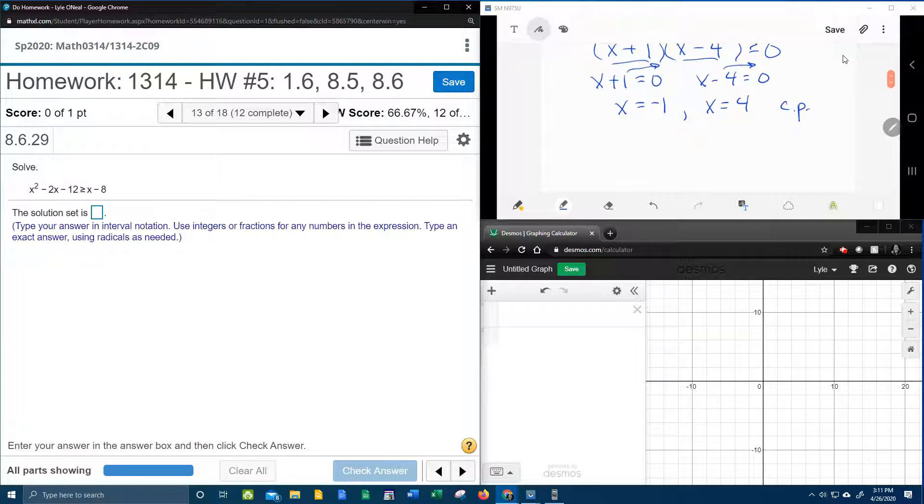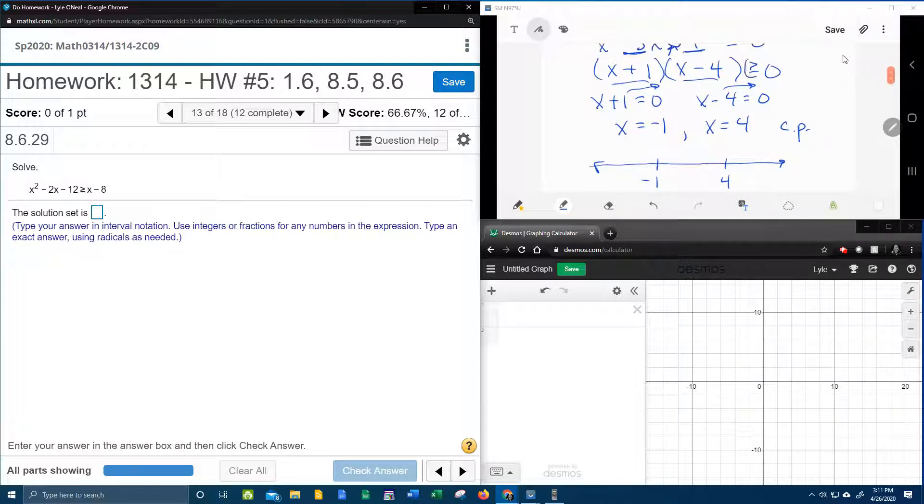Because this is an inequality, we have to figure out where on the number line this is going to shade. So let's go to the number line. We've got our critical points negative 1 and 4. Since our inequality is greater than or equal to, that means these are going to be solid dots.